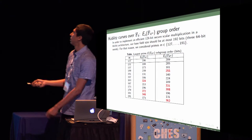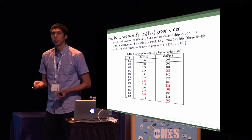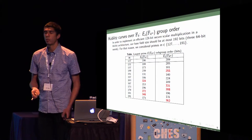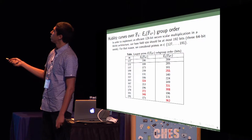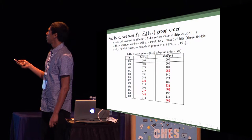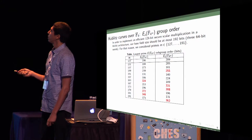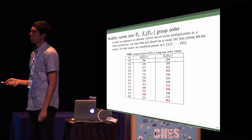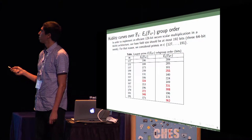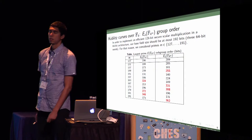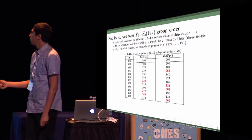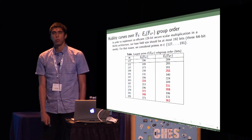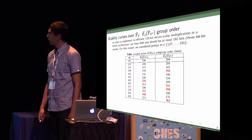Here are different groups. We wanted to implement 128-bit secure scalar multiplication in a 64-bit architecture. Our base field should be at most 122 bits with three 64-bit words. We have a multiplication of three 64-bit words. We considered primes between M equals 127 to 191. We have these subgroup orders.